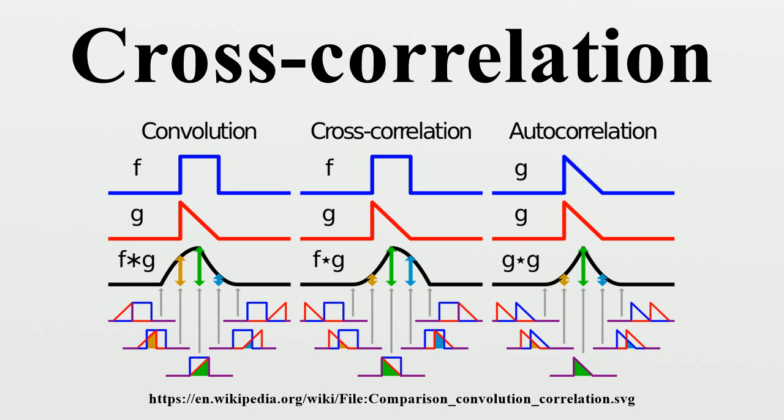In probability and statistics, the term cross-correlations is used for referring to the correlations between the entries of two random vectors x and y, while the autocorrelations of a random vector x are considered to be the correlations between the entries of x itself, those forming the correlation matrix of x. This is analogous to the distinction between autocorrelation of a random vector and cross-covariance of two random vectors.